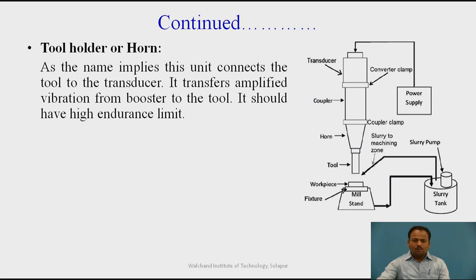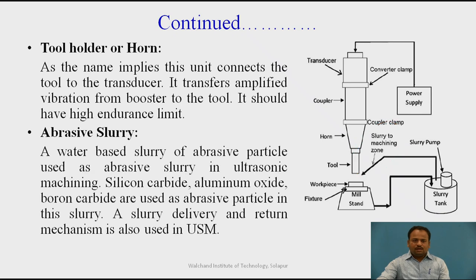The tool holder should have a high endurance limit. The abrasive slurry is mixed with water — a water-based slurry of abrasive particles is used as the abrasive slurry. In ultrasonic machining, silicon carbide, aluminum oxide, and boron carbide are used as abrasive particles in the slurry. A slurry delivery and return mechanism is also used in ultrasonic machining.